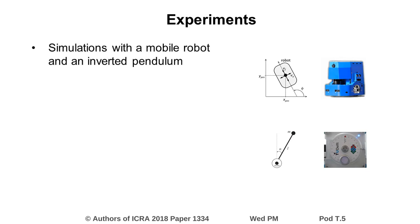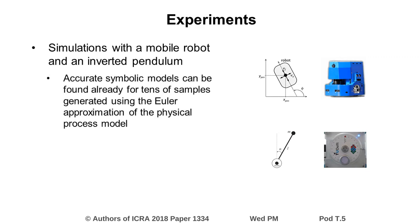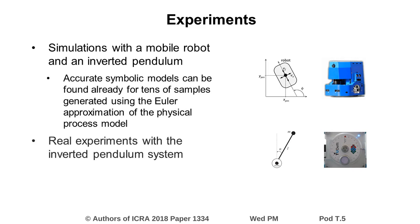We performed several experiments in simulations with a mobile robot and an inverted pendulum to evaluate the method for different numbers of features and various sizes of training sets. The results show that precise symbolic models can be found even for small training sets with only tens of samples, generated using the Euler approximation of the physical process model. We also conducted experiments with a real inverted pendulum system.